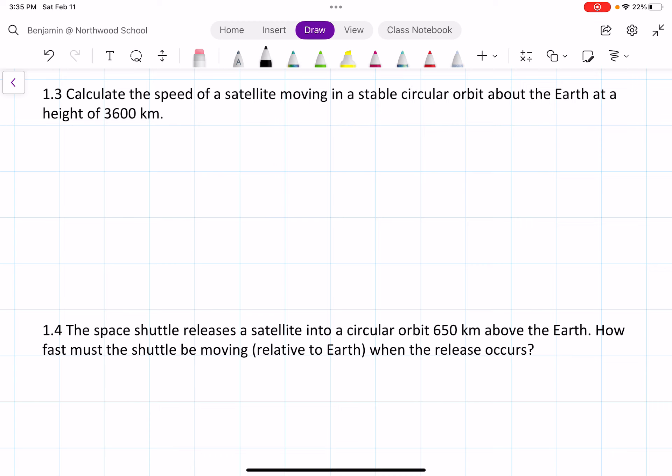For this problem, we are only given the height, and we can determine the radius. The radius is going to be 3,600 plus the radius of the Earth, which is 6,380, giving us a total radius of 9,980 kilometers.